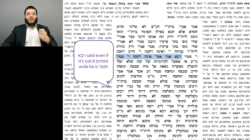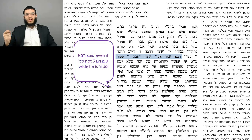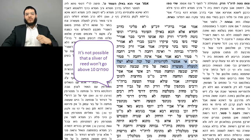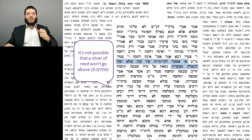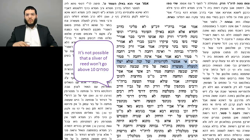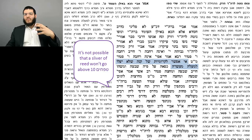Rav argues. He says: even if it's not six tefachim wide, and therefore it's just a regular object, the person is patur. So even though he threw the basket from the reshus hayachid to the reshus harabim and it's an object, not a reshus, he's still going to be patur. What's the reason? Because it's not possible that some slivers of the reed — since the baskets were made out of reeds — will not go up high above ten tefachim. Since the basket is exactly ten tefachim high, it's inevitable that some slivers of the reed will extend above ten tefachim. So although the person threw an object from the reshus hayachid to the reshus harabim, he's patur, since the whole thing did not come to rest in the reshus harabim — rather there are small parts that came to rest in a makom petur.